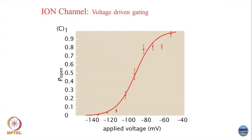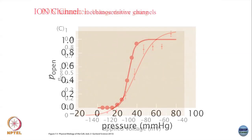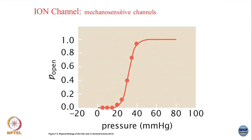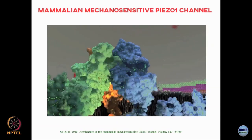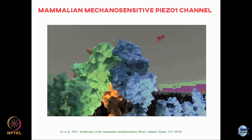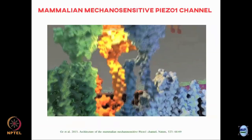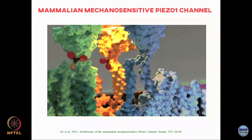Another example is mechanosensitive channels, where you apply tension to the membrane and that changes the probability of the channel being in the open state. Here is data from a mechanosensitive channel — the more tension or pressure you apply, the more you change the probability of it being in the open state. Here is a simulation of such a mechanosensitive channel, the PSO1 channel: as you change the tension across the membrane, the ion channel protein can open up and allow ions to pass through.